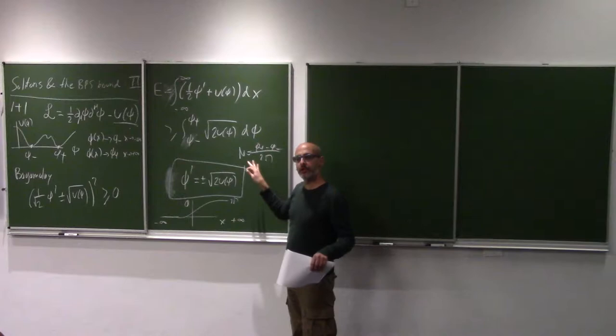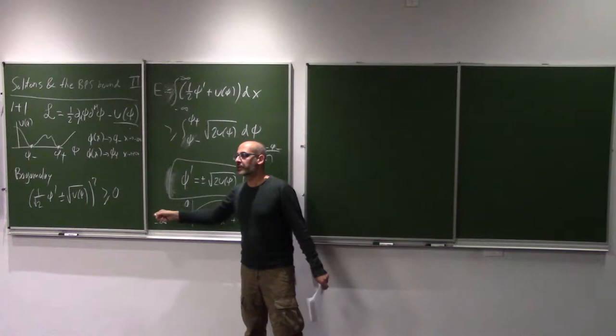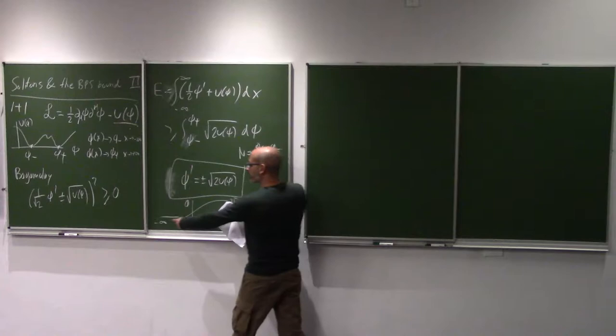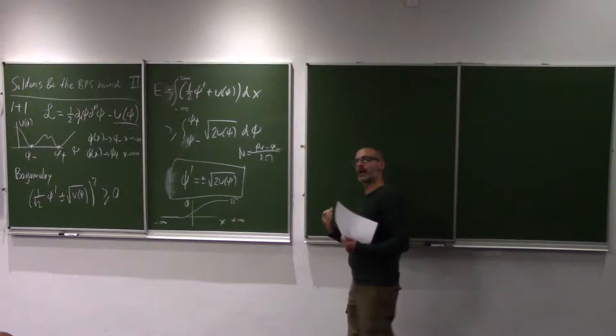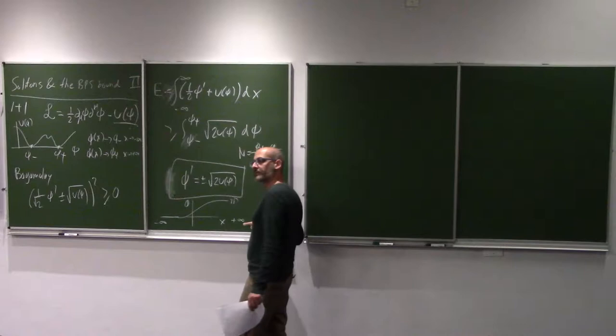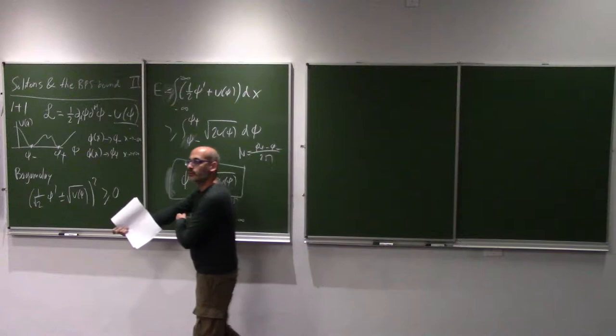However, in higher dimensions, the boundary is not going to be just two points. Here in 1D, the boundary of our space is just two points at plus or minus infinity. In general, we want to consider the boundary of spacetime. For instance, if we were working in 2+1 dimensions with coordinates x and y, the boundary at infinity is a circle. So what we're going to be looking at is the field configuration — it can do whatever it wants in the middle.